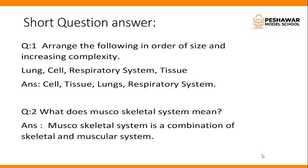You will arrange them from simple to complex. Then question number 2: what does musculoskeletal system mean? The answer is: the musculoskeletal system is the combination of the skeletal and muscular system.